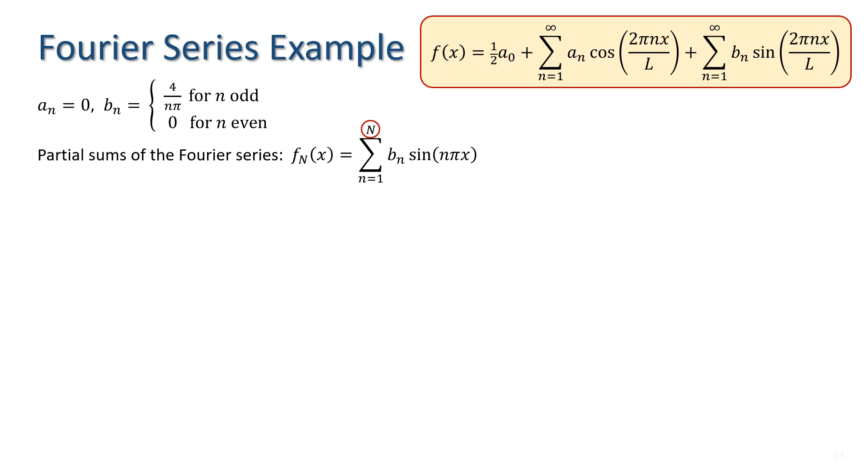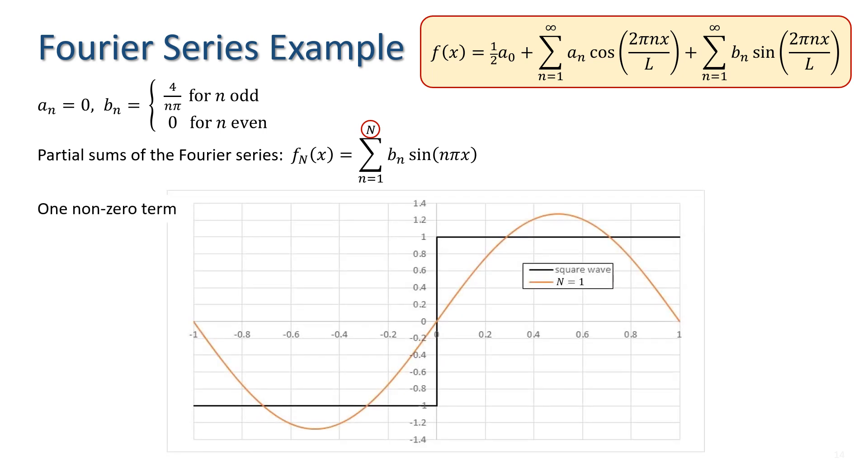thus the first non-zero term corresponds to n equals 1, and that we have a single sine wave of amplitude 4 over pi, which looks like this.